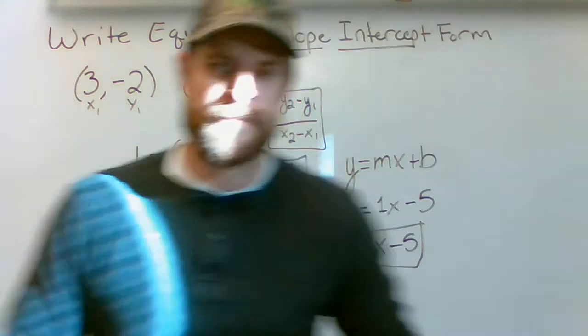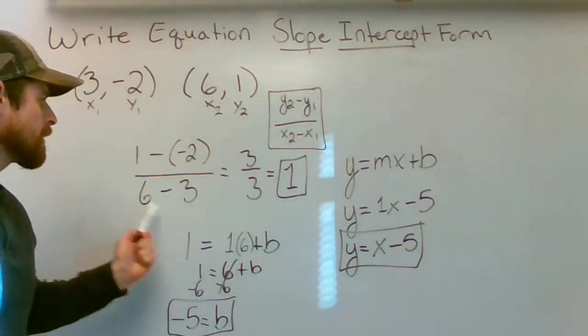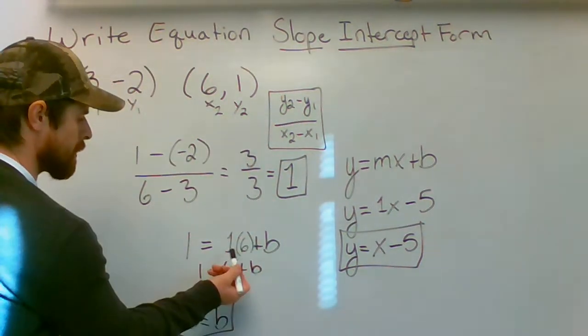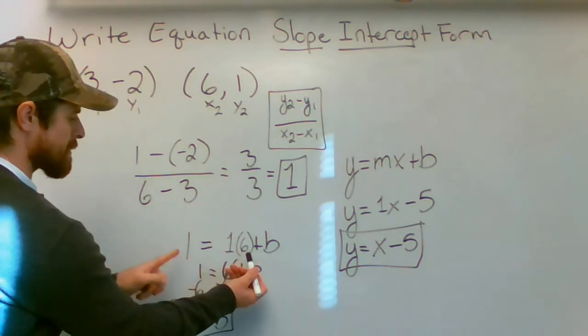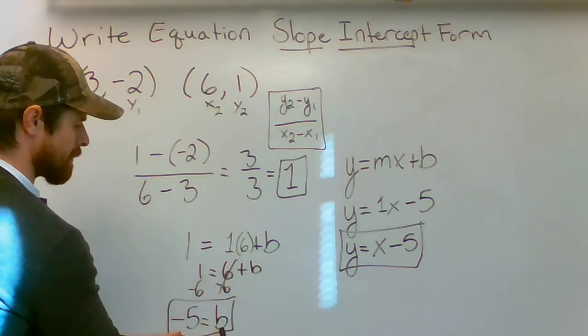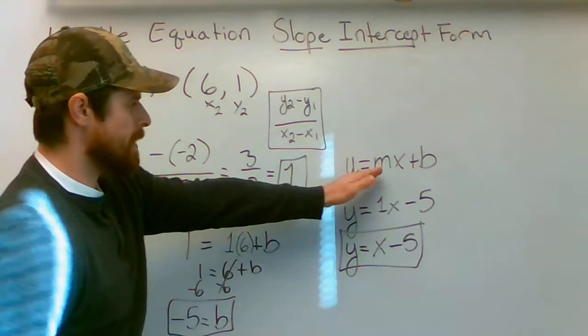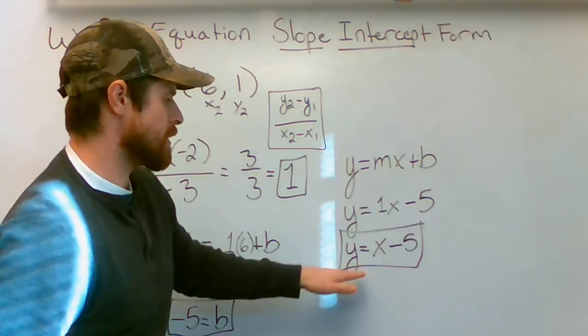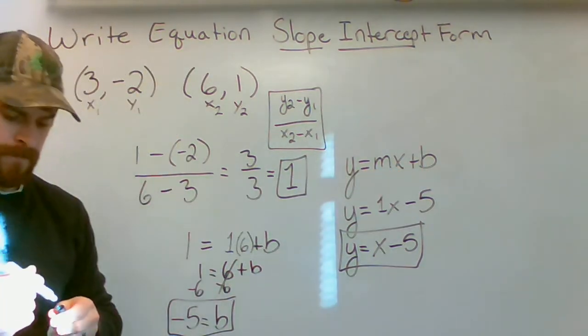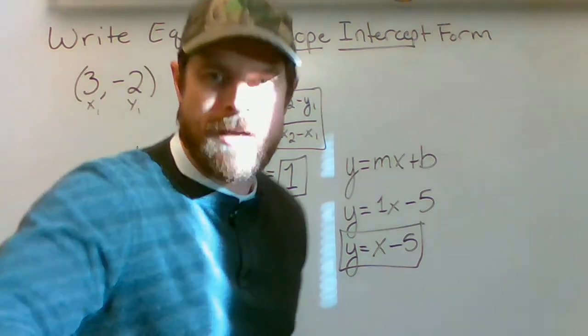There you go. So taking two points, use the slope formula, find the slope, plug the slope in, replace the x and the y, isolate the variable b, and now you have the two pieces of information you need to write your equation out. Study hard and good luck on your upcoming test.